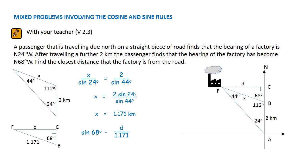Sine of 68 equals opposite D over hypotenuse 1.171. We just have to transpose and use our calculator to evaluate D. D is equal to 1.09 kilometers.